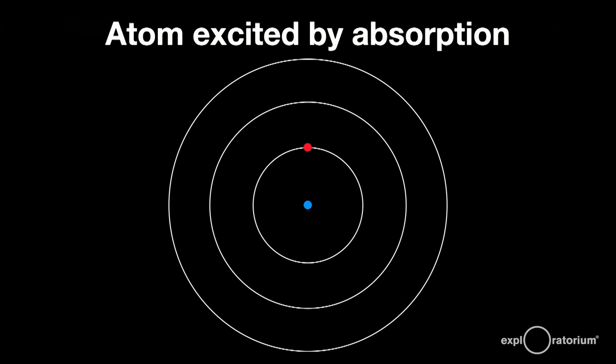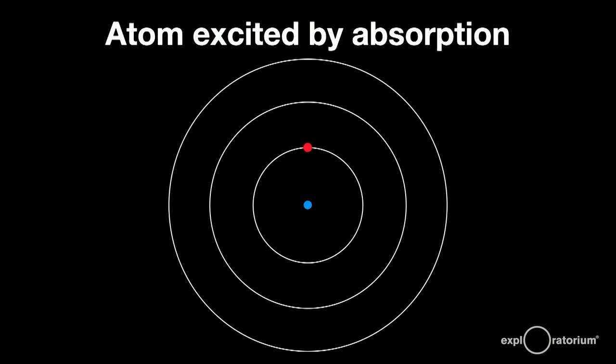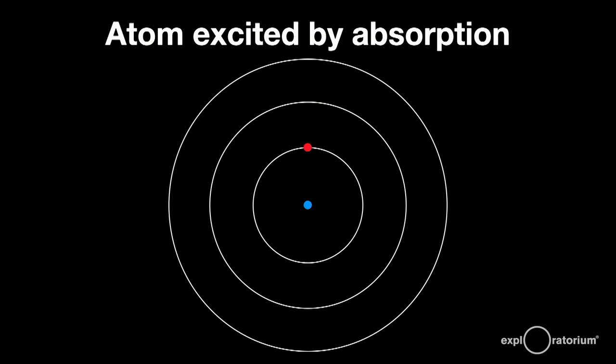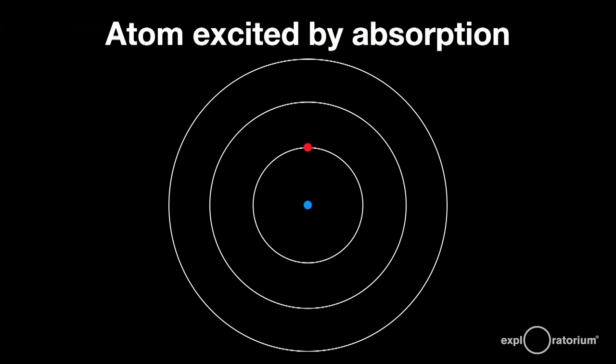Let's look at the making of light at the atomic level. This is a very simplistic model of the atom. The nucleus in the middle contains protons and neutrons, and the electrons surround the nucleus in shells. The energy levels of these shells are determined by the laws of quantum mechanics. Electrons can only be in these specific shells or energy levels — like walking up a set of stairs, you can only stand on the stairs, not between them.